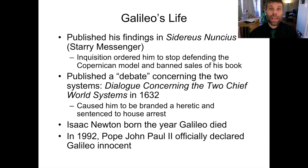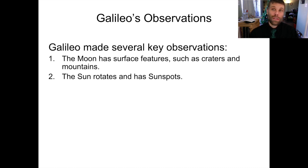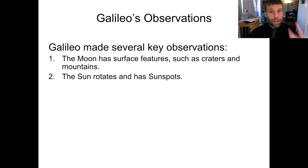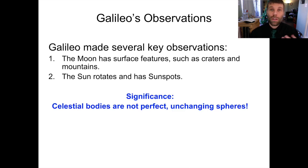So what did Galileo see in his telescope that led him to this extreme conclusion and to this confrontation with the Catholic Church? He made four key observations, and I'm going to list them in order of increasing importance. The first two: Galileo observed that the moon contains surface features like craters and mountains, and also that the sun rotates, has spots, and that those spots change over time. These observations are significant because they contradict one of the foundational principles according to Aristotle that form the basis of the Ptolemaic geocentric view — namely that celestial bodies are exact, unchanging spheres. They have blemishes, mountains, craters, and freckles that come and go.